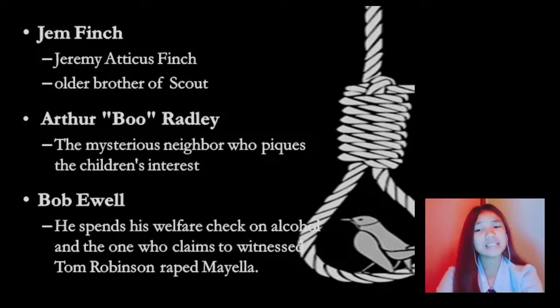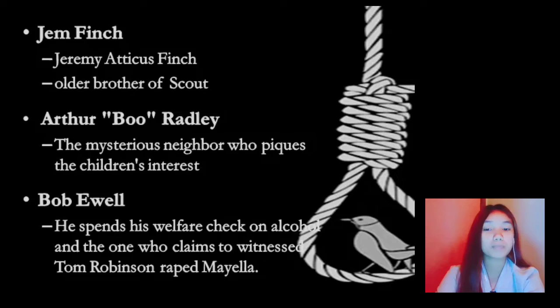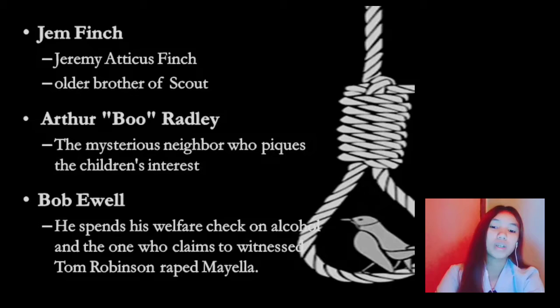The fifth character is Bob Ewell, characterized as a drunken and mostly unemployed member of Maycomb's poorest family. In his knowingly wrongful accusation that Tom Robinson raped his daughter, Ewell represents the dark side of the South: the ignorance, poverty, squalor, and hate-filled racial prejudice.